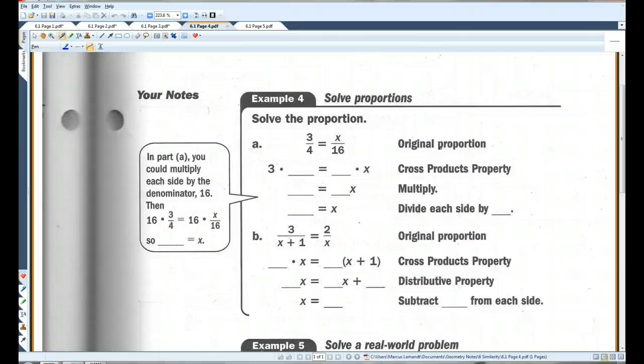Solve the proportion. We have 3 over 4 equals x over 16. I'm going to cross multiply. 3 times 16 equals 4 times x. 3 times 16, I'll do that over here. 3 times 6 is 18, so you get 48. 48 equals 4x. I'll divide each side by 4. x equals 12.